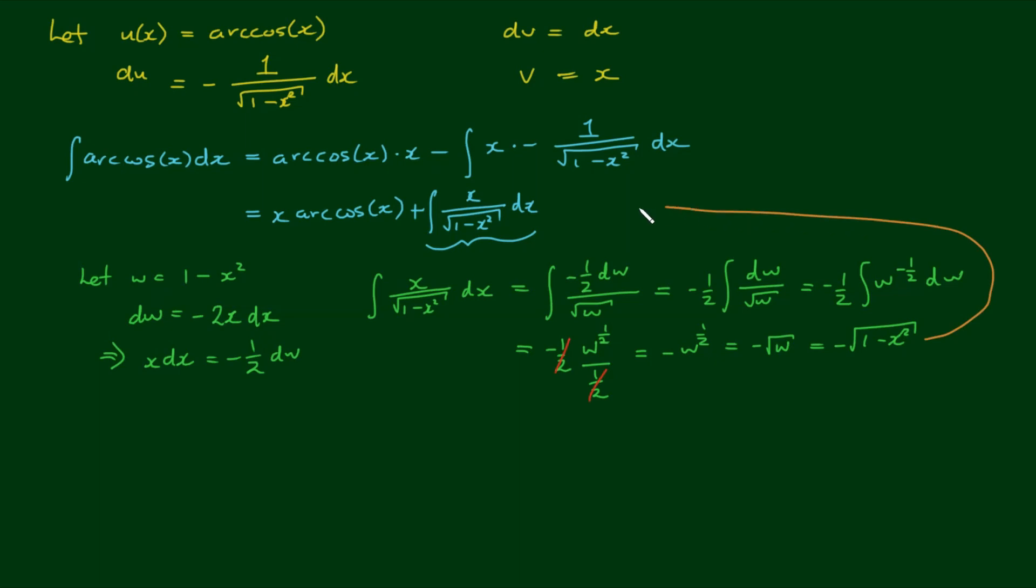So now we substitute this into the original integral, and we get the integral of arc cos dx equals x times the arc cosine of x minus the square root of 1 minus x squared. And because this is an indefinite integral, we always include an integration constant plus C. So let's box our final answer and add this to our table of integrals.